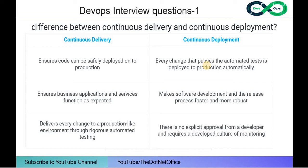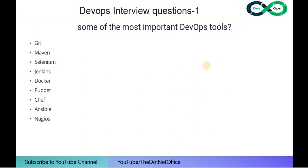The difference between continuous delivery and continuous deployment: Continuous delivery ensures code can be safely deployed to production — it ensures business applications function as expected and delivers every change to a production-like environment through automated testing. Continuous deployment means every change that passes automated tests is deployed to production automatically, making the software development and release process faster and more robust, with no explicit approval required from a developer.